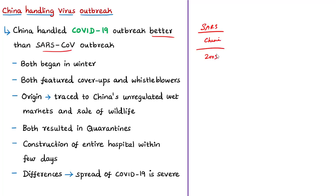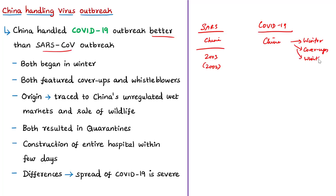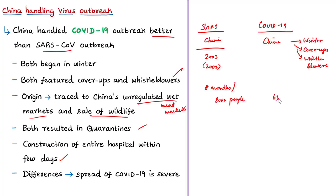The editorial's author feels China handled the COVID-19 outbreak better than it handled SARS. The SARS coronavirus was identified in 2003, first infecting humans in Guangdong province in November 2002. Both outbreaks began in winter, featured cover-ups and whistleblowers — COVID-19 was revealed by a doctor who posted information online — and both were traced to China's unregulated wet markets and sale of wildlife. Both resulted in quarantines, panic, and construction of hospitals within days. However, SARS took eight months to spread to over 8,000 people, while COVID-19 infected over 63,000 people in about six weeks.